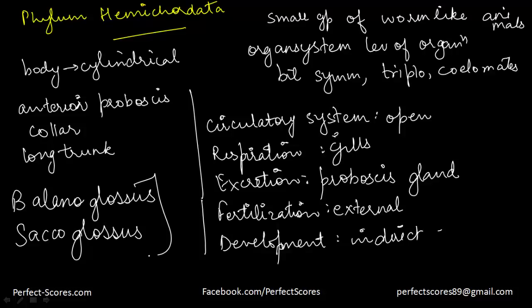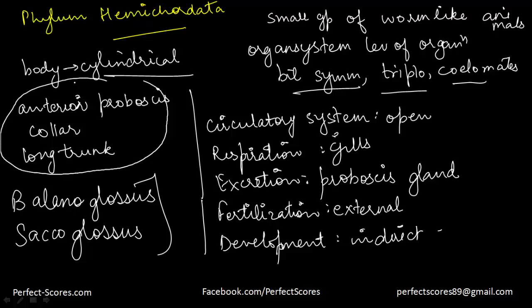To quickly revise Phylum Hemichordata: it is a small group of worm-like marine animals with organ system level organization, bilateral symmetry, and they are triploblastic coelomates. The circulatory system is open; respiration is through gills; excretion is through the proboscis gland; fertilization is external; development is indirect. The body is cylindrical, divided into an anterior proboscis, a collar, and a long trunk. Examples are Balanoglossus and Saccoglossus. In the next video we will be taking up Phylum Chordata, discussing its features and comparison with non-chordates.